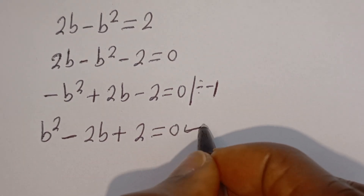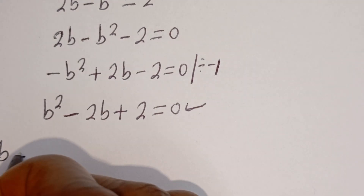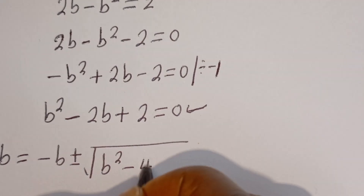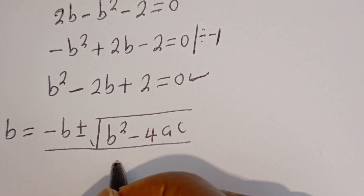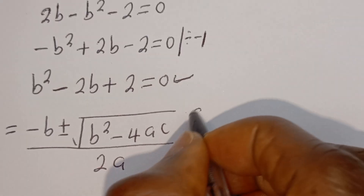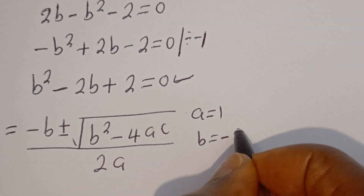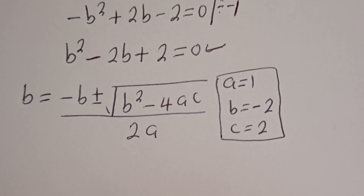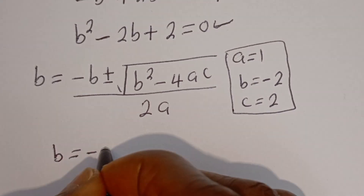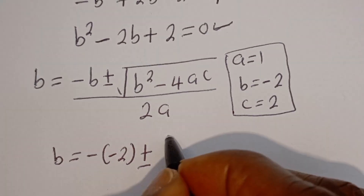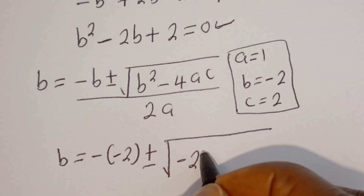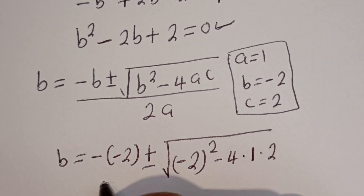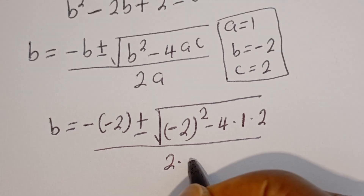This is a quadratic equation which can be solved using the quadratic general formula. We have B equal to minus b plus or minus the square root of b squared minus 4ac, divided by 2a. From this equation, a is equal to 1, b is equal to minus 2, and c is equal to 2.